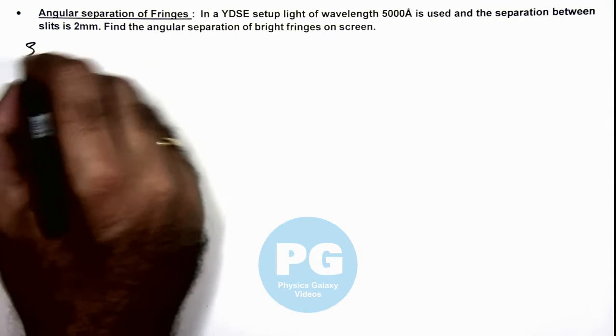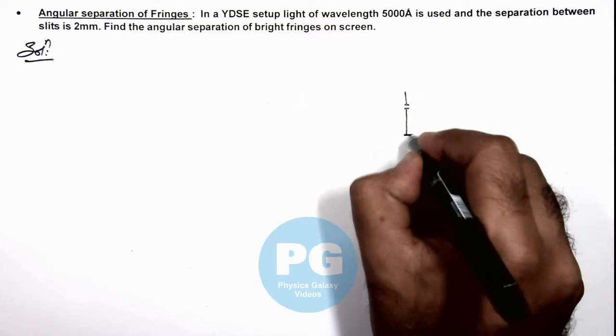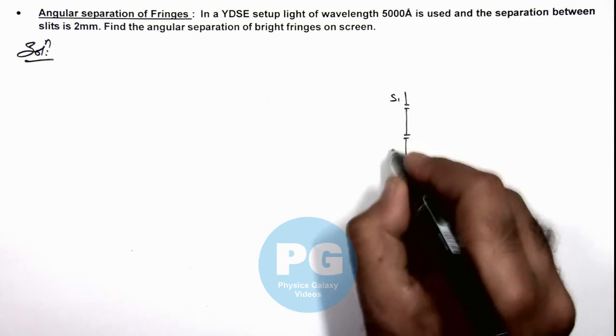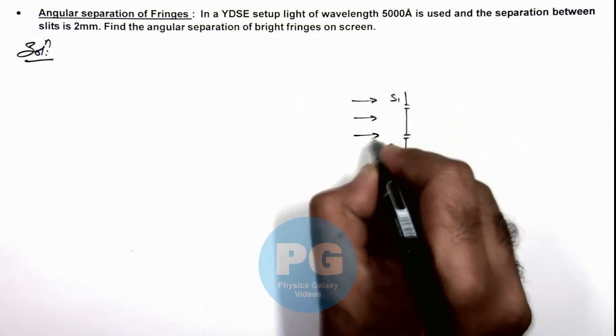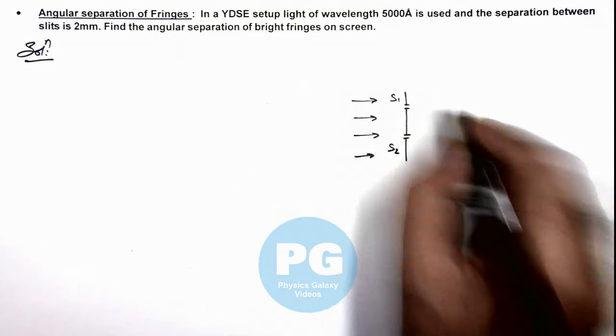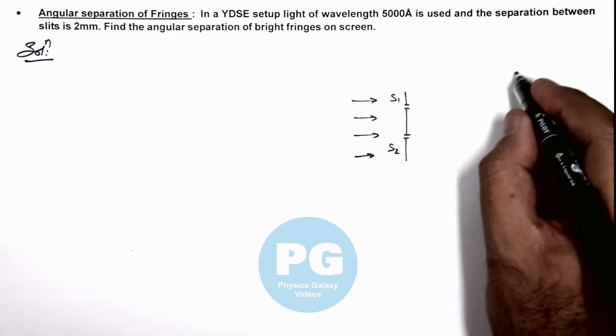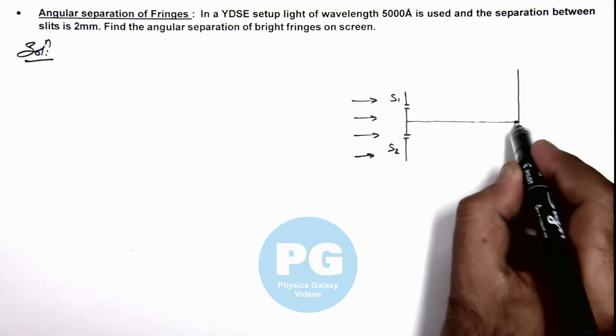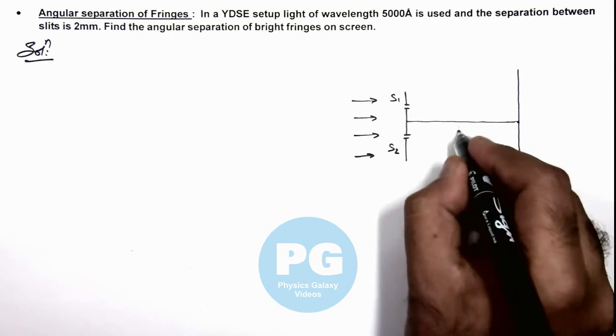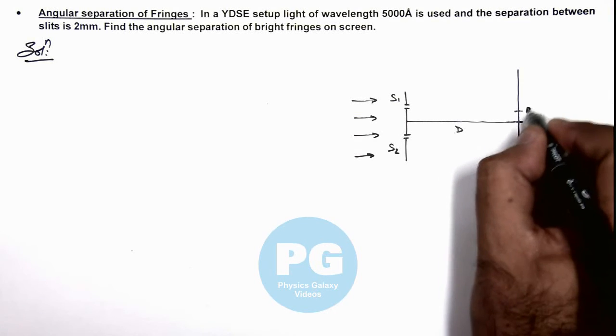So here in solution, if we analyze YDSE setup in which we are given with 2 slits S1 and S2, on which we consider monochromatic light falls in such a way that S1 and S2 are lit in same phase. Then in this situation, if the screen is at a distance d, then at different locations bright fringes are obtained over here.